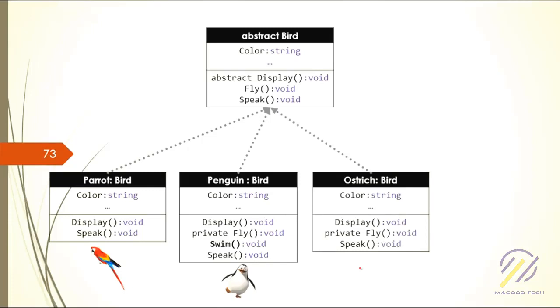Let's say we have ostrich - same thing with the display method. We have to write that ostrich do not fly, so we're changing the fly method and changing the speak method as well.